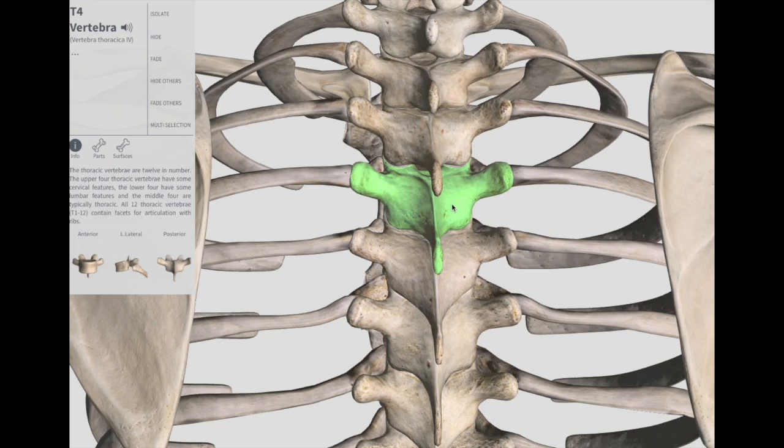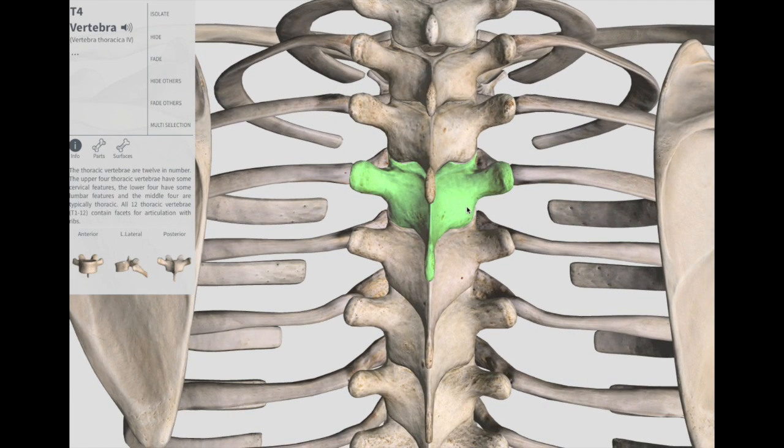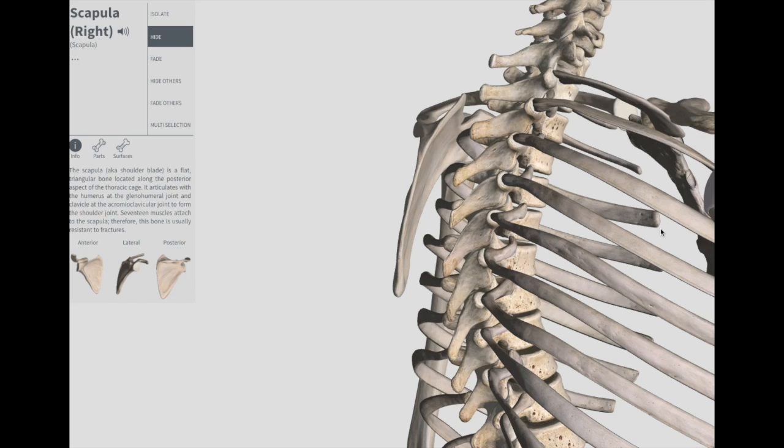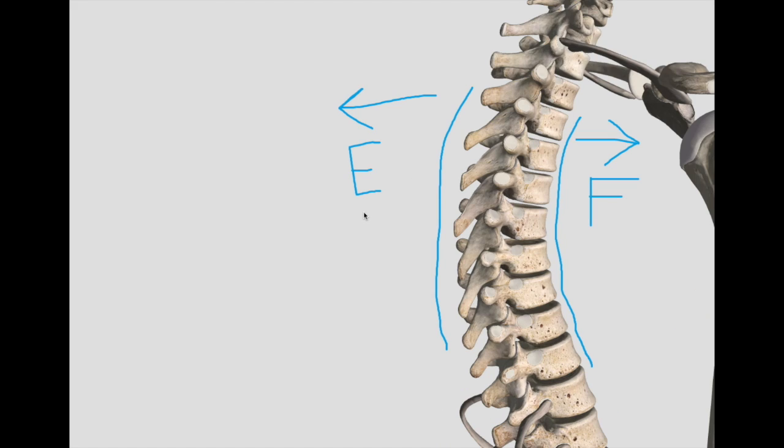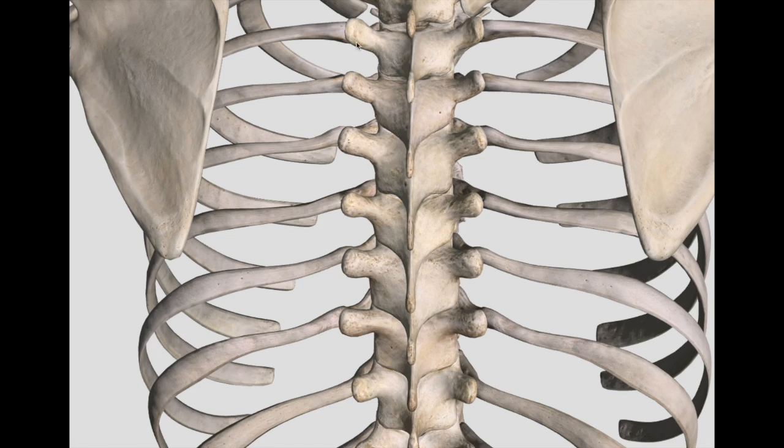In the thoracic region you want to evaluate for rotation both in flexion and extension - going this way and going this way. The whole time what you're doing is palpating along these spinous processes to feel for some kind of asymmetry between both sides.